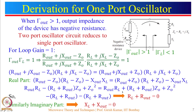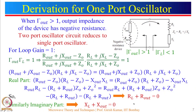After that we looked at the derivation for the one-port oscillator. A two-port problem was reduced to a one-port problem because we were now looking only at the output side of the device. We saw the condition that R_L plus R_out should equal 0, and since R_out is negative, R_L will be positive. Similarly, for the imaginary part, X_L plus X_out equals 0 — so if X_out is inductive, X_L will be capacitive, and vice versa.